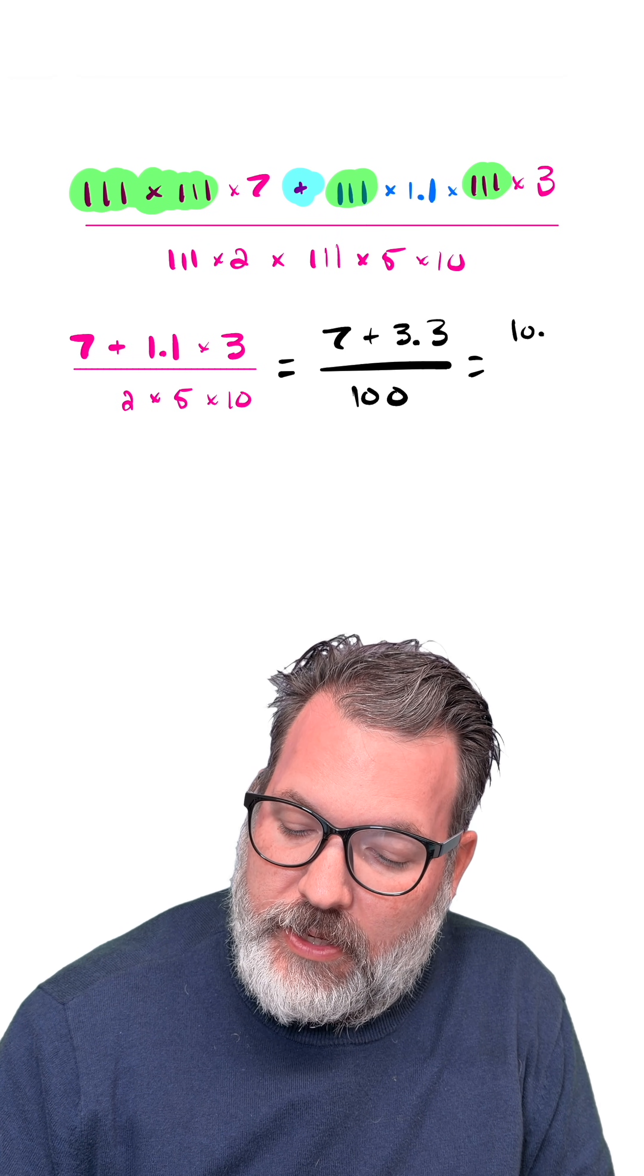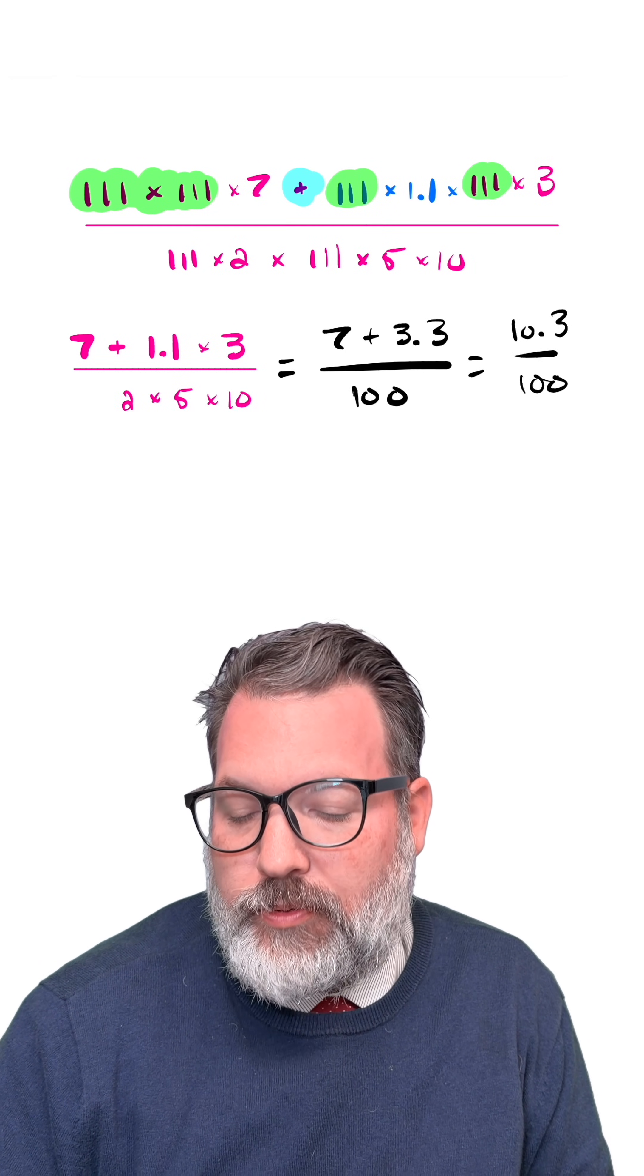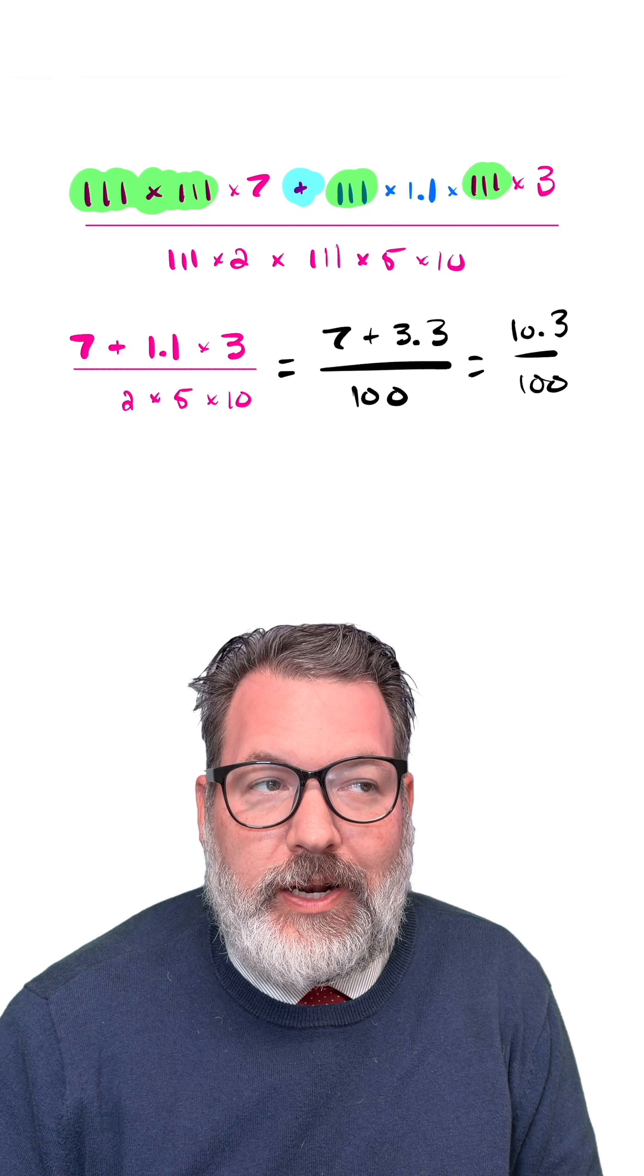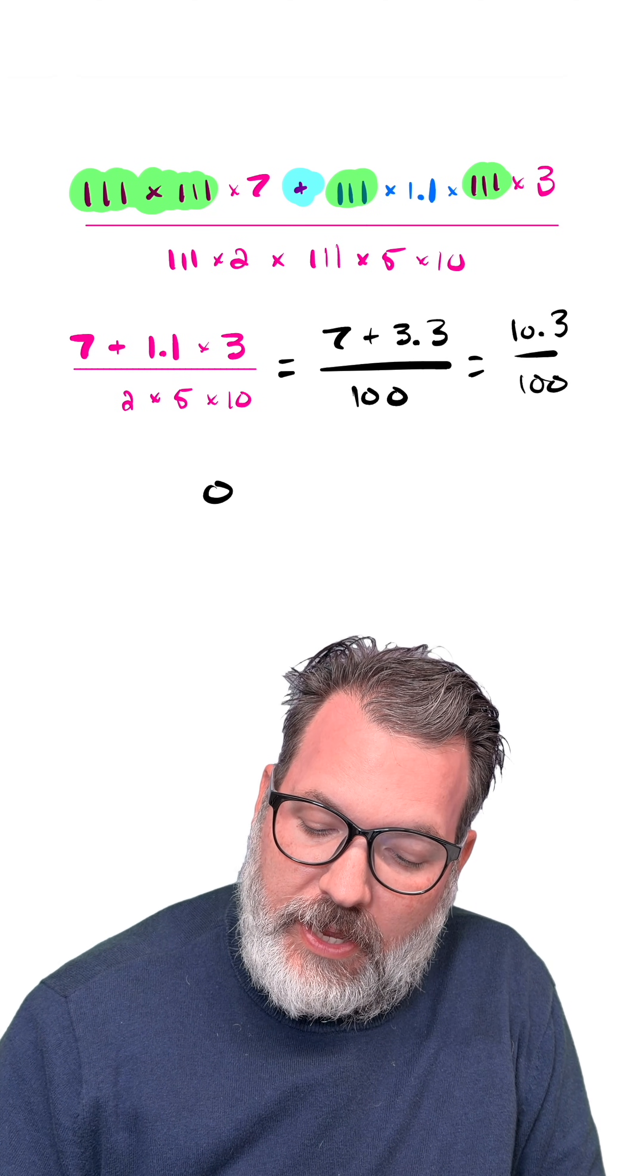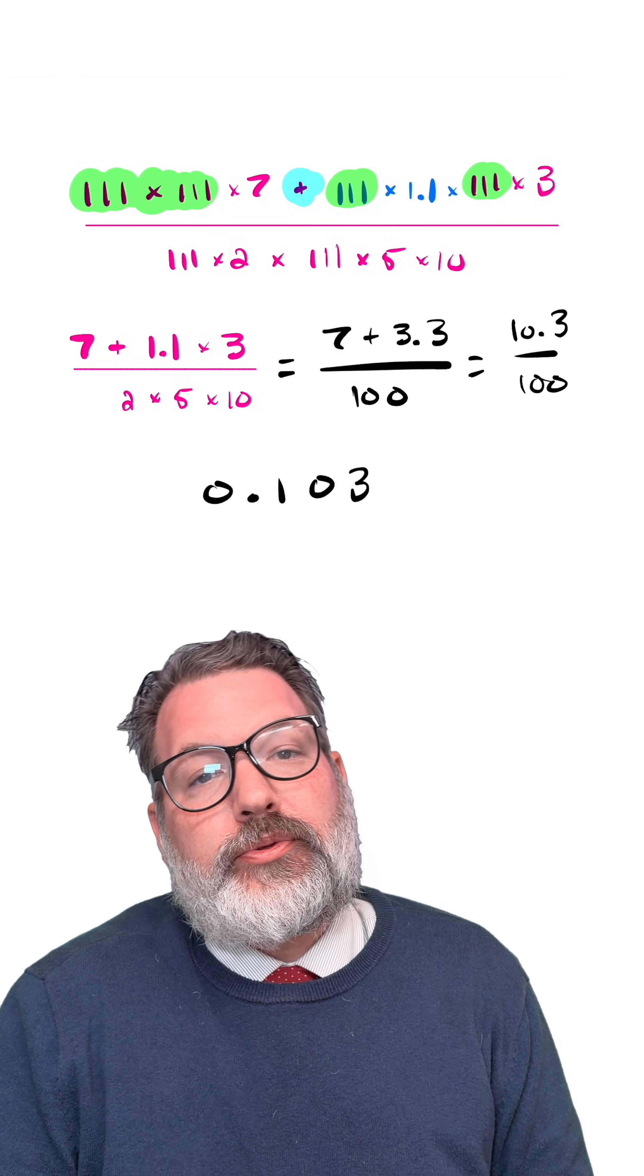7 plus 3.3 is 10.3, and 10.3 over 100, we can take advantage of place value and represent as the decimal 0.103.